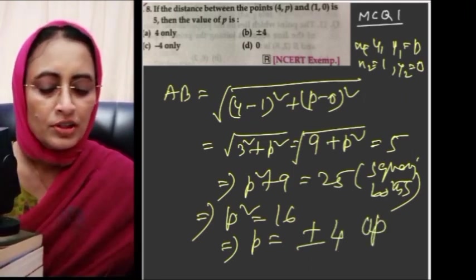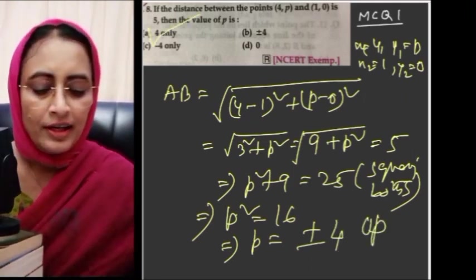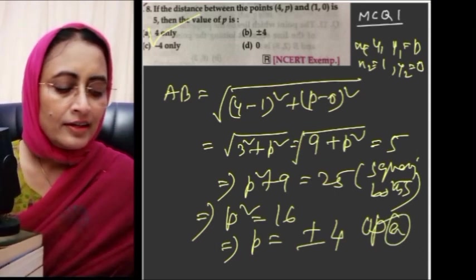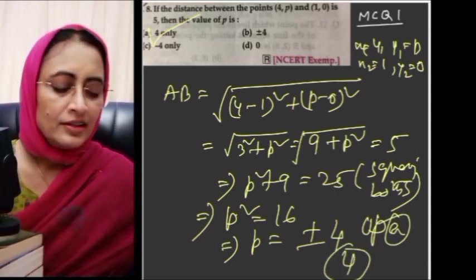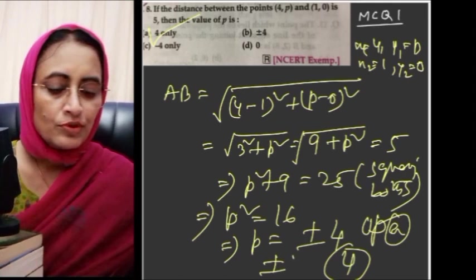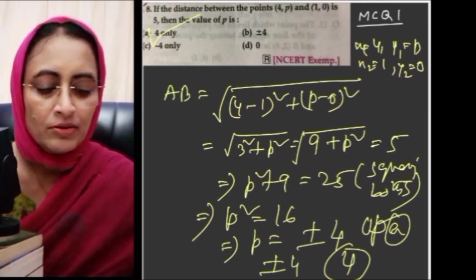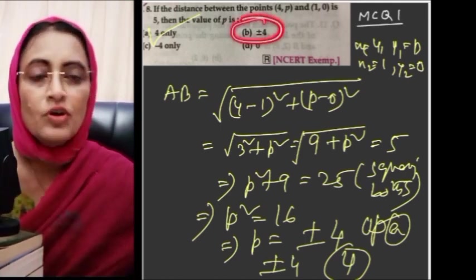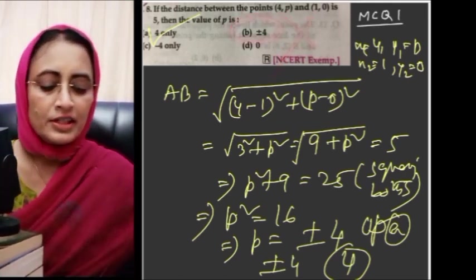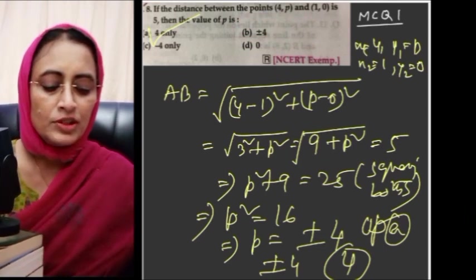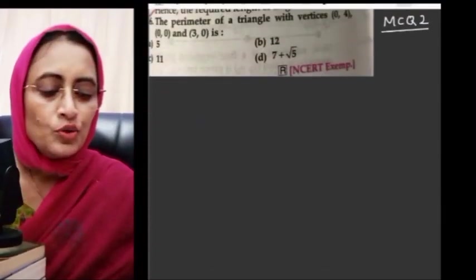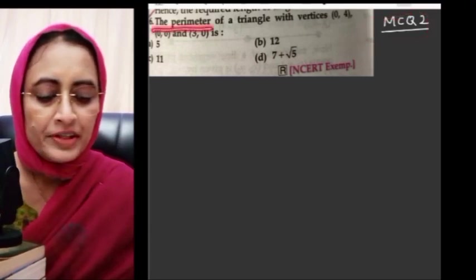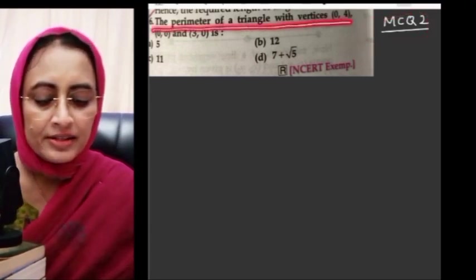The correct answer is option A, which is 4. Never write plus minus 4 because at the options there is no plus minus 4. The wrong answer — distance is always positive, so 4 is the correct answer.